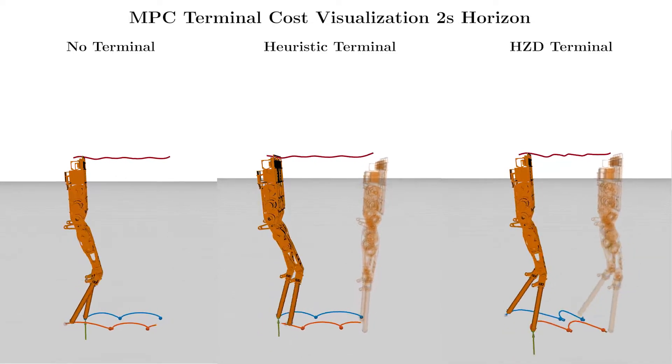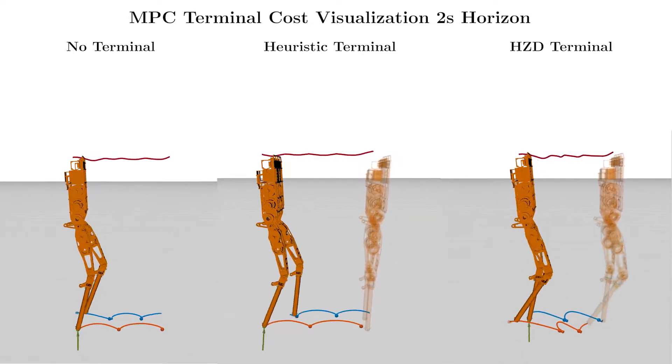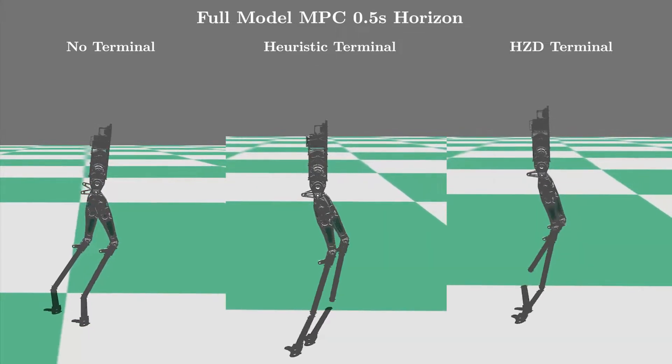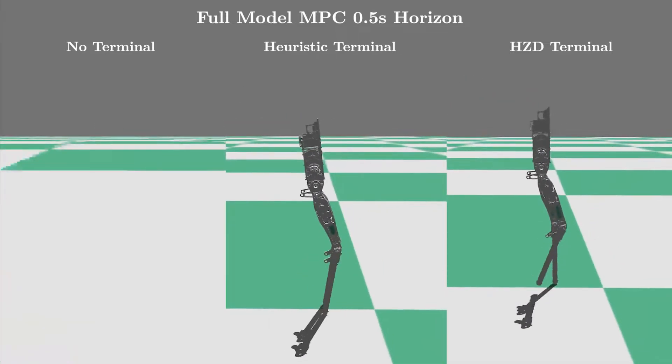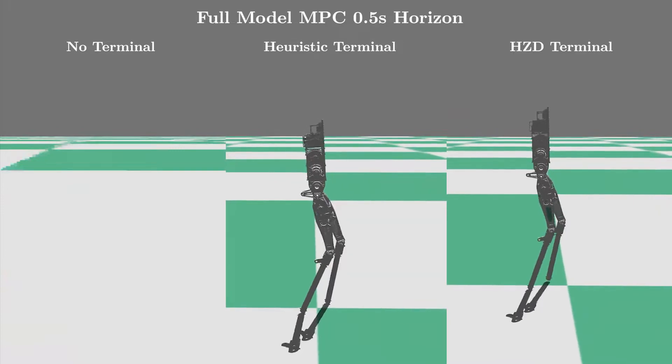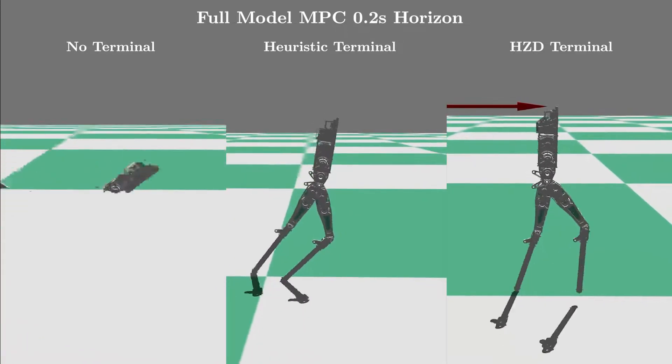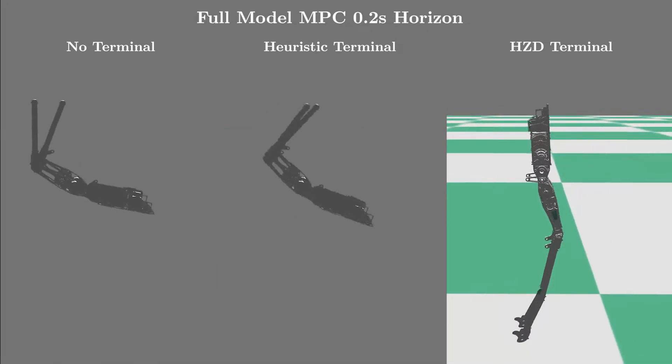Furthermore, we present the results of an investigation of different terminal costs. Here it can be seen that extending the presented MPC approach with a hybrid zero-dynamics terminal cost enables a drastic reduction of the MPC horizon to 0.2 seconds without prohibiting the ability to reject disturbances.